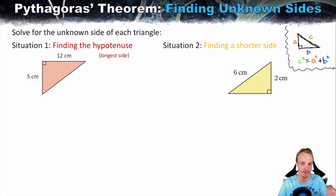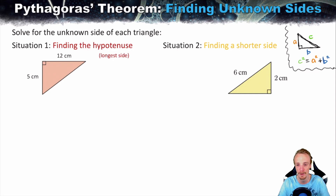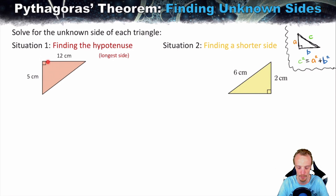Let's start with situation one: finding the hypotenuse. The hypotenuse is the longest side of the right angle triangle and will always be opposite the right angle. The right angle will also always be between the two shorter sides.